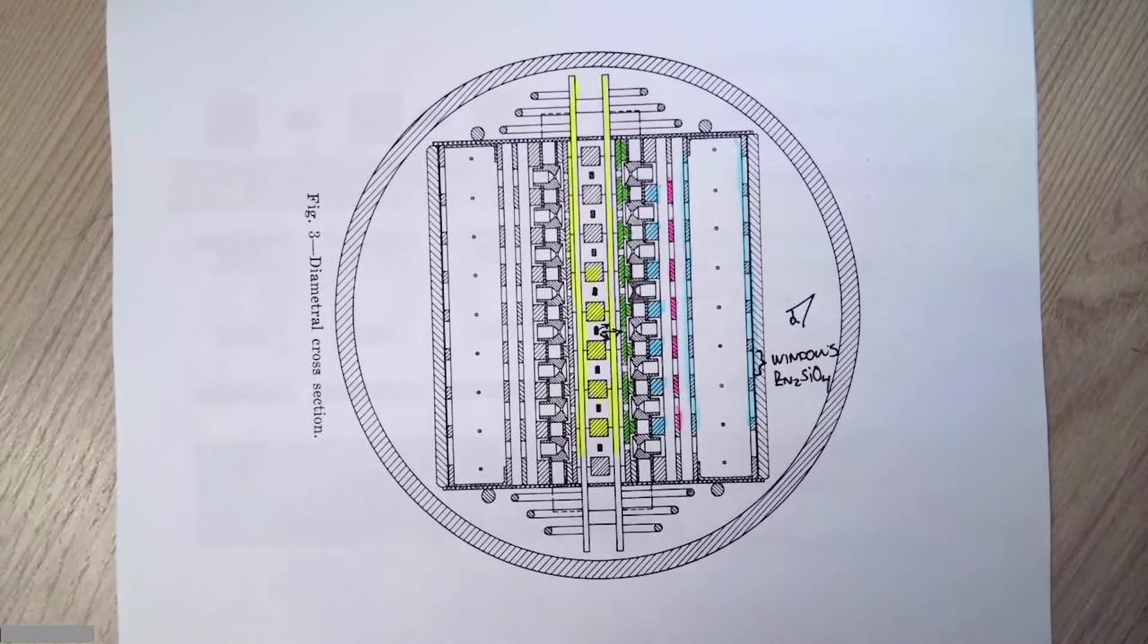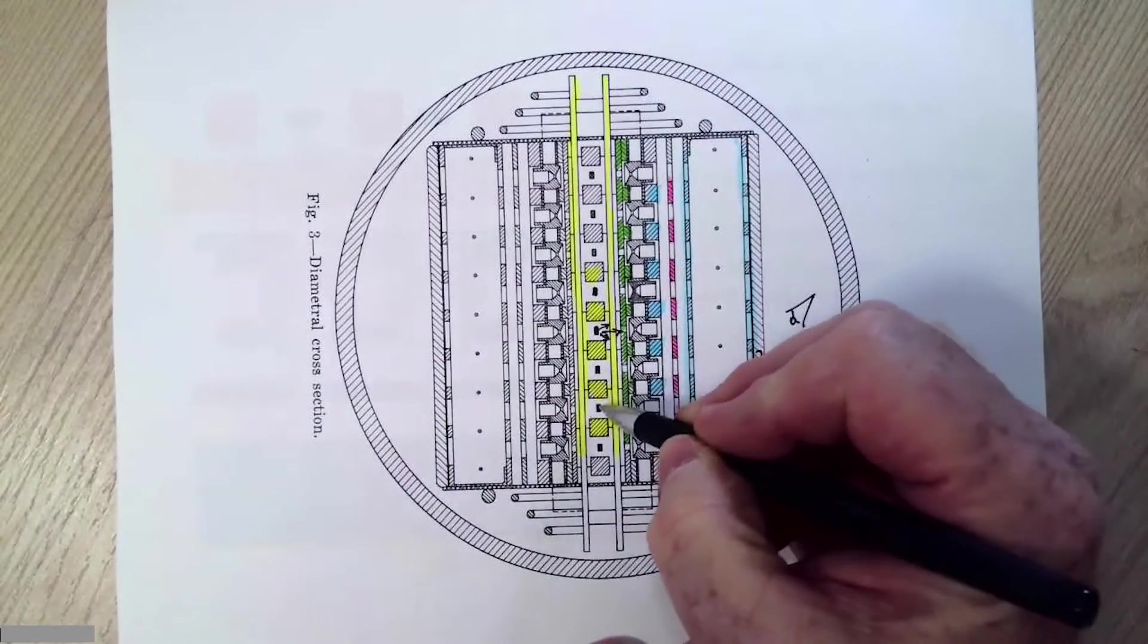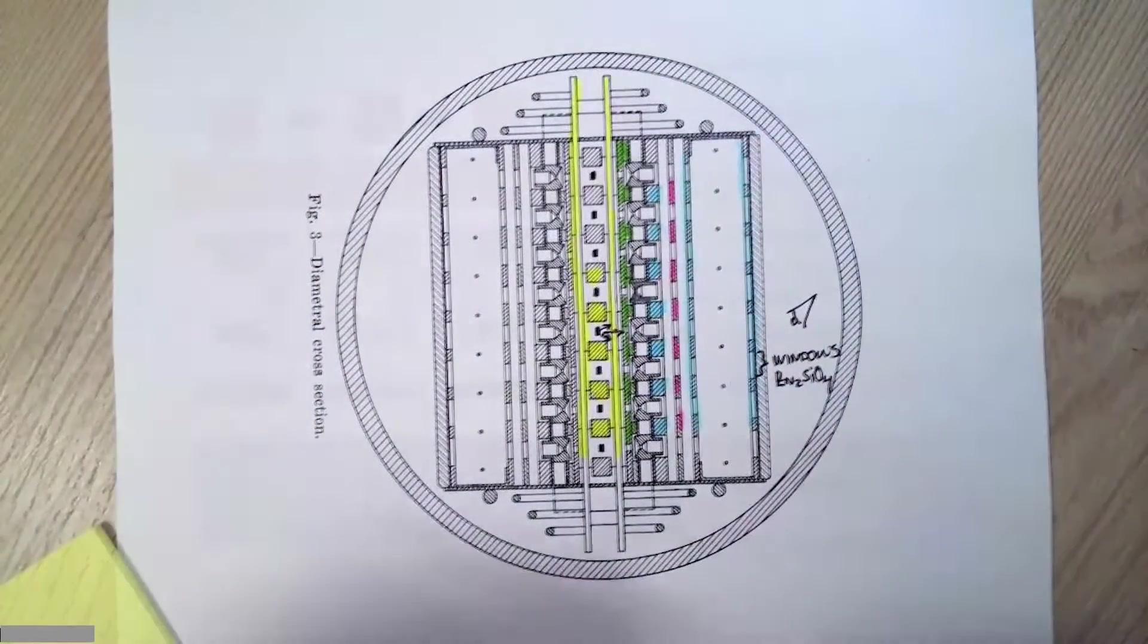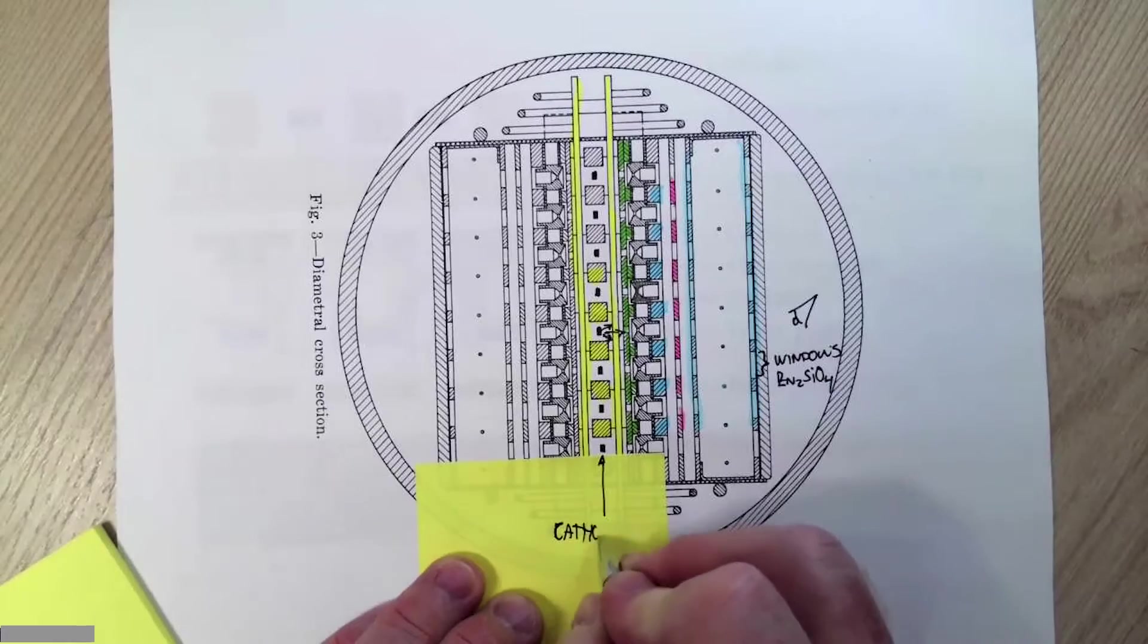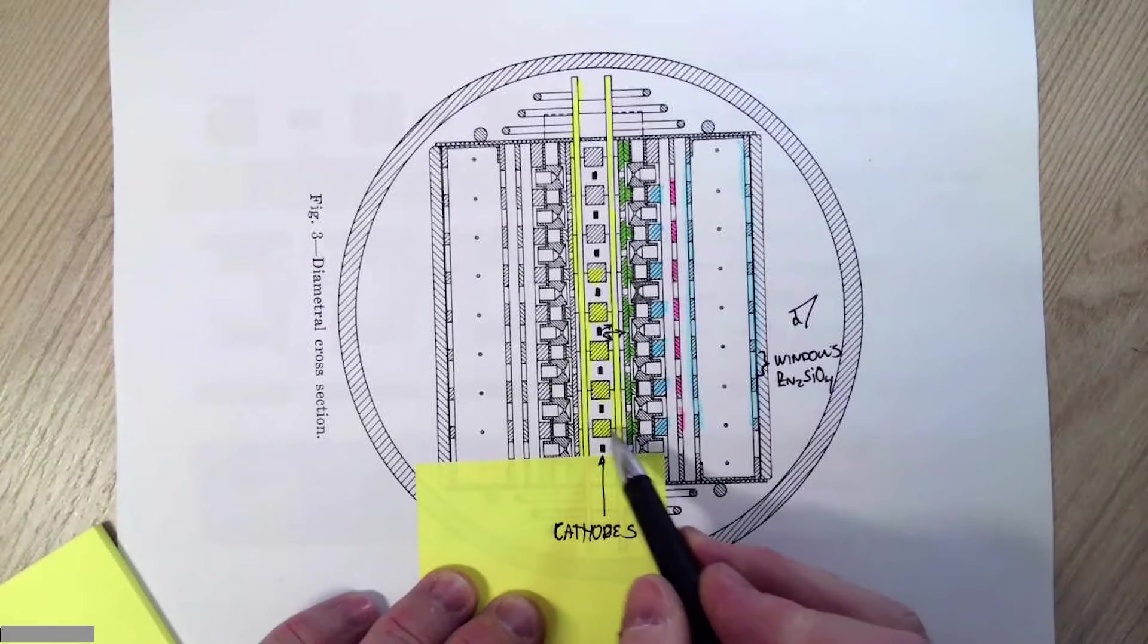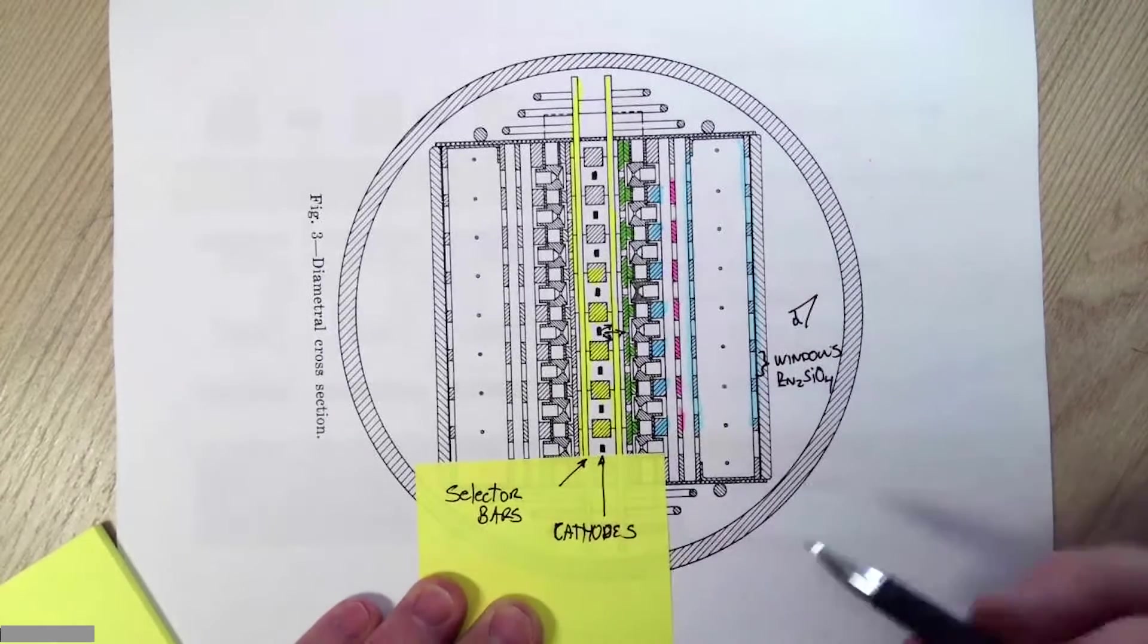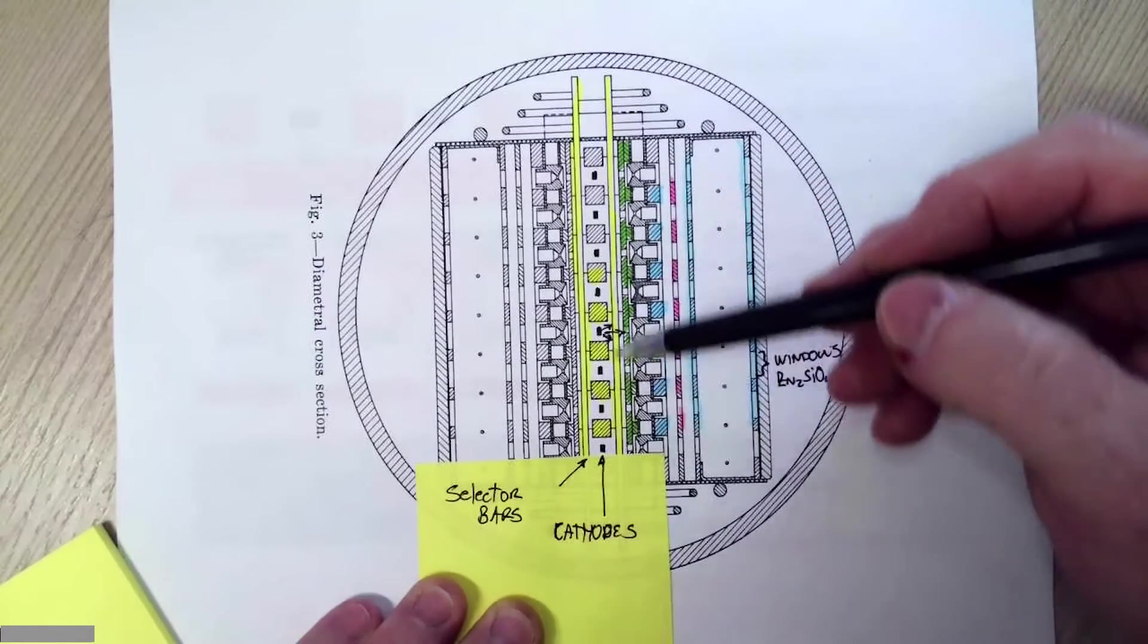But this is a cross section of the tube. We can see the glass envelope around it. The first thing I want to point out are these little black bits right here. These are our cathodes. So the structures that I have highlighted in yellow, these two bars, these are our selection bars. Notice that the tube is symmetric about this center line, about the cathodes. There's a side A, a side B.